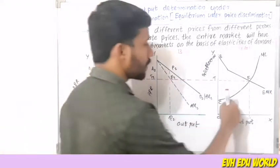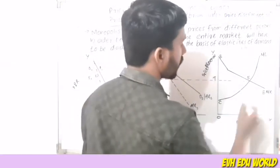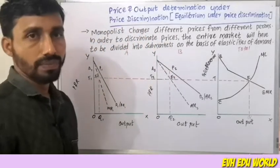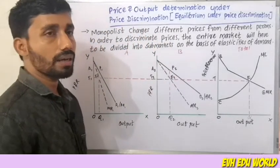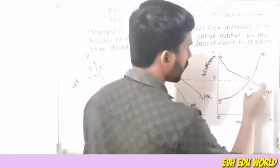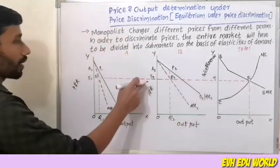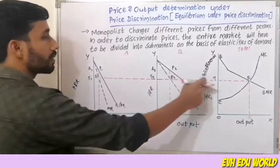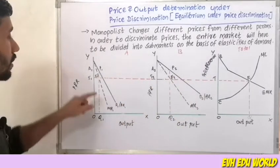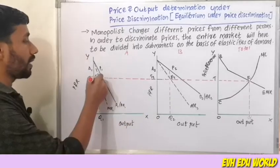The marginal cost curve and the marginal revenue curve meet at the equilibrium point. Where the MC curve and MR curve intersect, the two are equal — that is the equilibrium point. The point applies to both market A and market B.